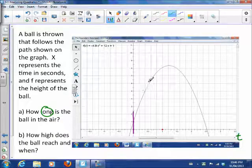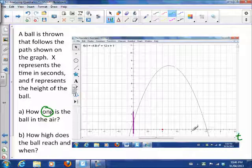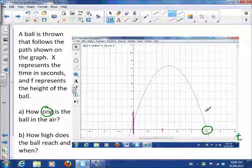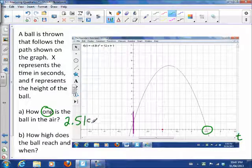Well, if the graph represents the height of the ball, then it hits the ground when the graph hits 0 or the X axis. So right there. That's how long the ball was in the air. So we can answer this with about 2.51 seconds.